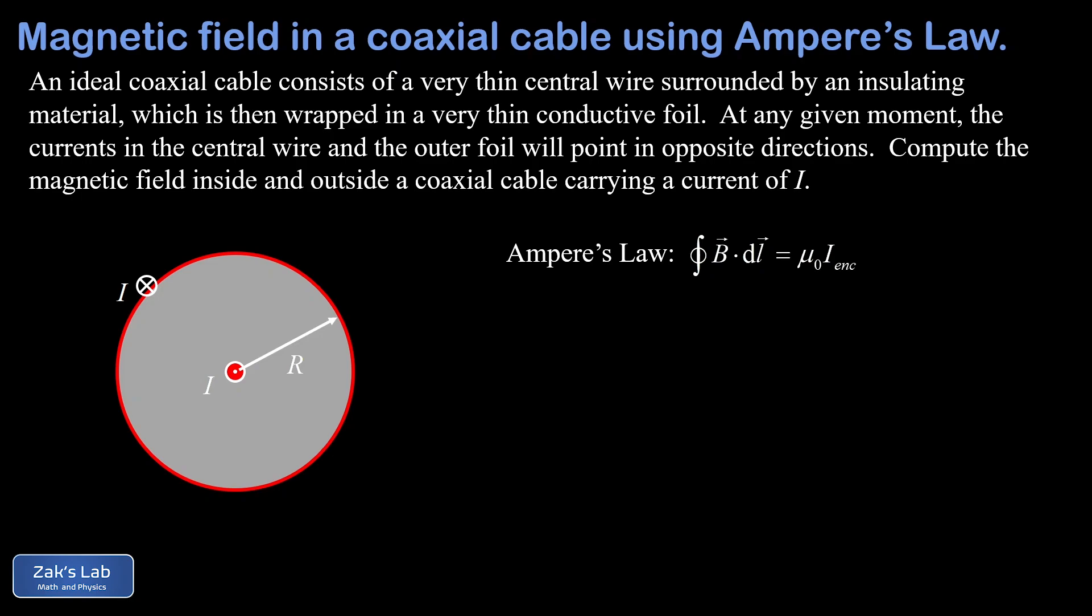The central current is coming right out of the page at us, and that direction is normally indicated by a dot with a circle around it. The current in the foil is uniformly spread around the circumference and points into the page, directly away from us, as indicated by the X inside a circle. We've labeled the radius of the cable itself as capital R.